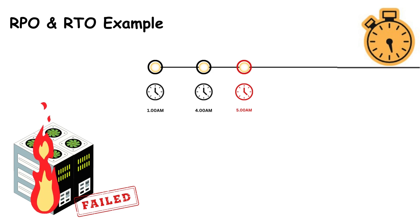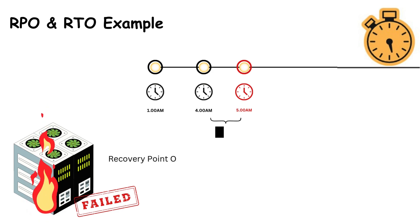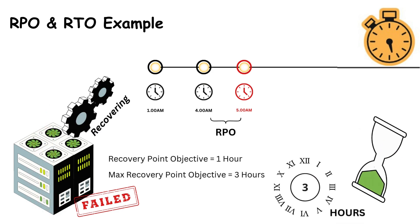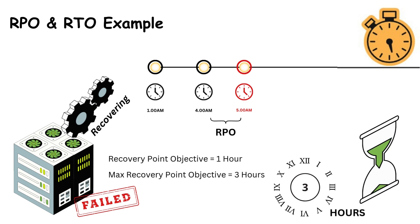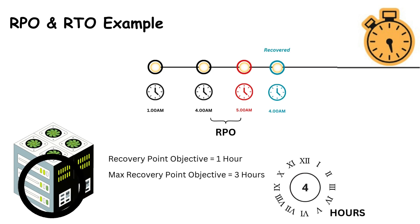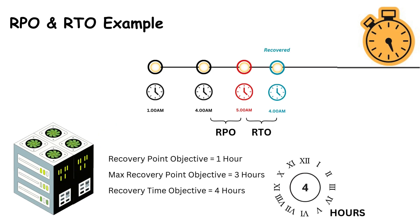In this situation, the latest available backup is from 4 a.m., which we can restore. However, any data created between 4 a.m. and 5 a.m. is lost. According to this scenario, our maximum data loss — RPO — is 3 hours. After the failure, we need to start the recovery process. In this example, the time required to complete the recovery process — RTO — is 4 hours.